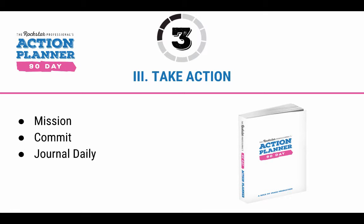I suggest journaling daily. The Rockstar Professionals 90-Day Action Planner is a guide that will help you create your SMART goal, your milestones and KPIs, and then journal each day. Each morning, you can see what you're aiming to achieve and write out your plan. Each evening, you can review what you've accomplished and identify things you need to change to improve your results. Weekly, you'll assess your progress and make sure you have a plan to be productive. Each month, you'll have a milestone to review how things are going, make sure you're on track, and adjust accordingly if needed.